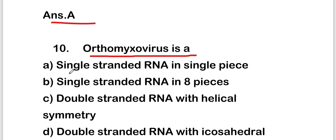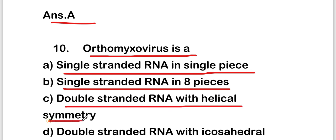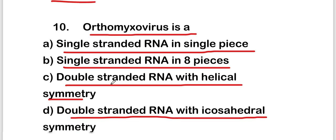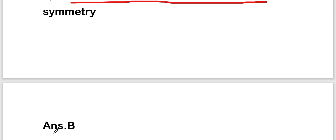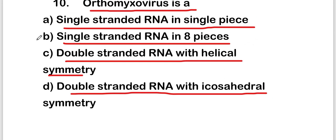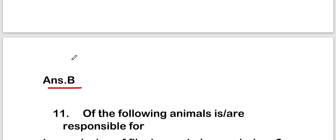The next question is: orthomyxovirus contains which type of RNA? Options are single-stranded RNA in a single piece, single-stranded RNA in eight pieces, double-stranded RNA with helical symmetry, or double-stranded RNA with icosahedral symmetry. The right answer is option B — single-stranded RNA in eight pieces.